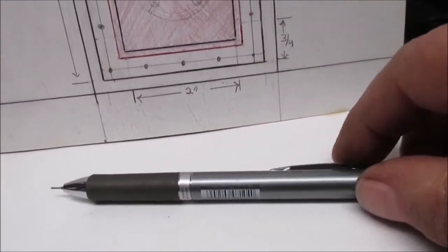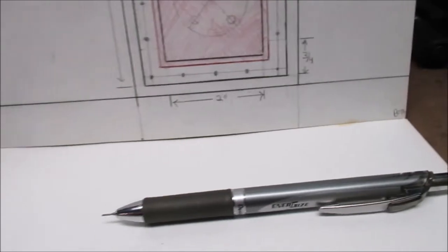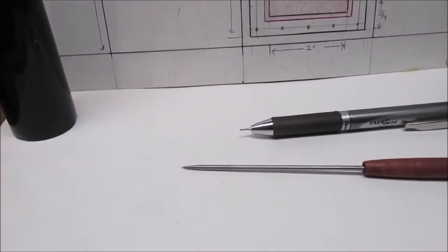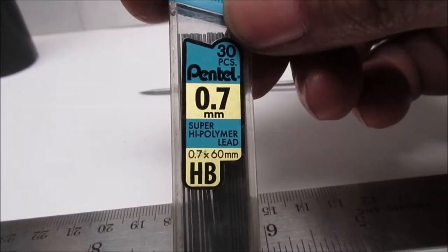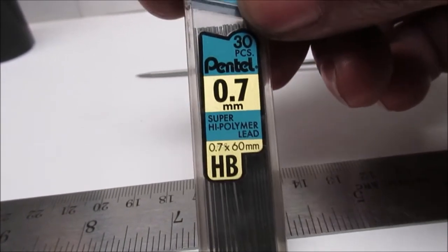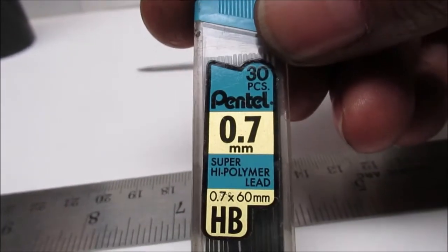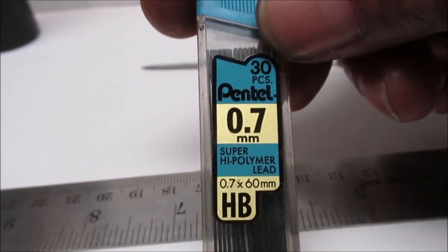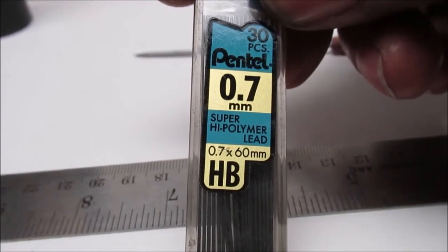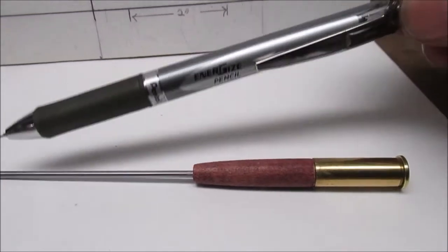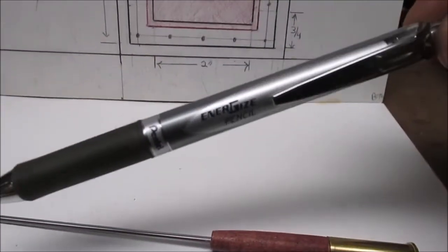This is a mechanical pencil and the lead is - hold on, let me find it - here's the lead: H I think means hard, B is black, 0.7 millimeter. I had some 0.5 in a pencil and that was a very good pencil. Go to your office supply place if you want to buy stuff like this. This has been a really good pencil.